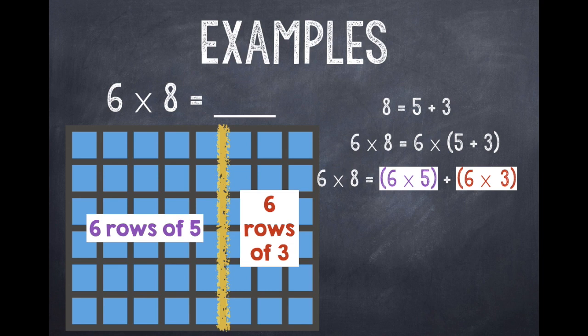So when I rewrite it, 6 × 8 is equal to 30 + 18. Then to find my product, all I have to do is add 30 + 18. And remember, if you need to, you can rewrite it vertically to help you add. And then I see that 6 × 8 is equal to 48.